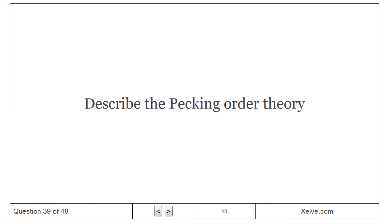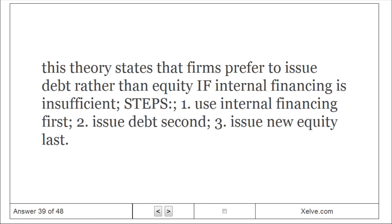Describe the pecking order theory. This theory states that firms prefer to issue debt rather than equity if internal financing is insufficient. The steps are: 1) use internal financing first, 2) issue debt second, 3) issue new equity last.